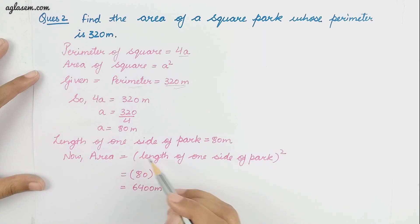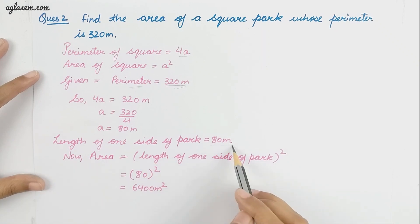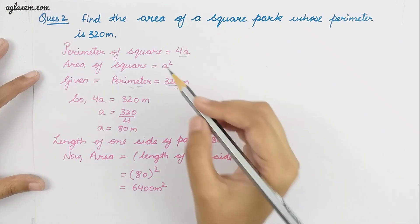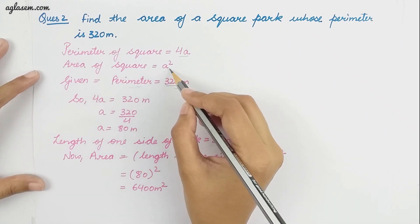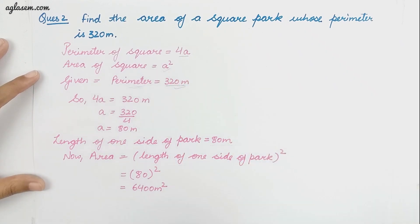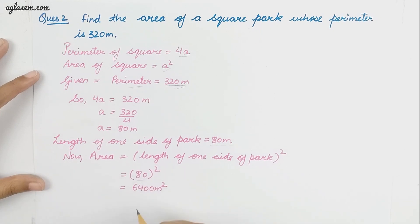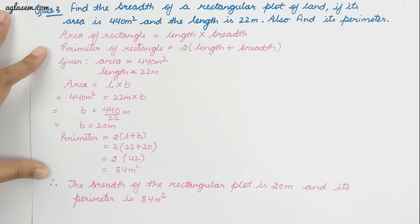The length of one side of the park is 80 meter. Now we estimate the area using the formula for a square. The value of a is 80 meter, and the square of 80 is 6400 meter square.